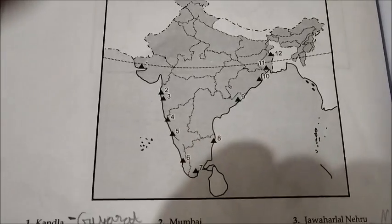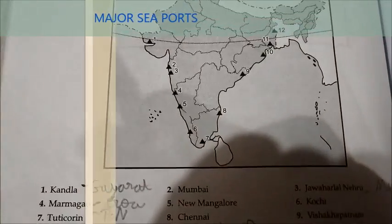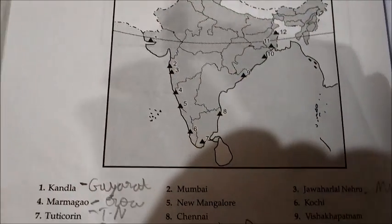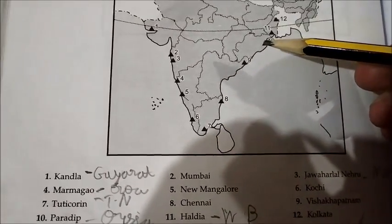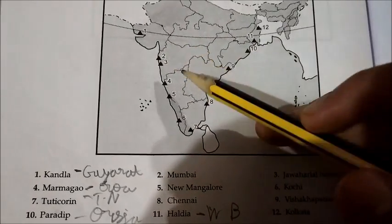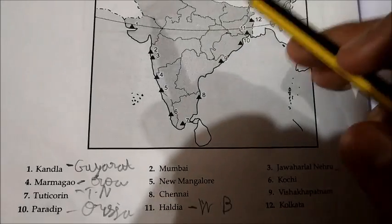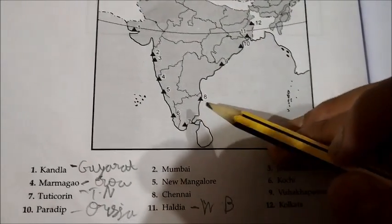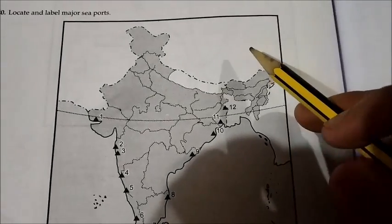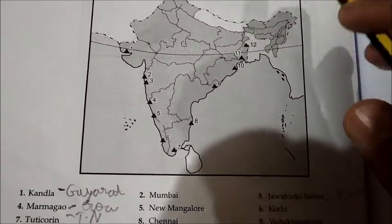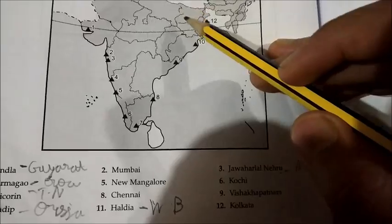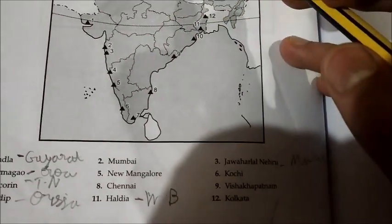For major seaports: Kandla in Gujarat, Marmagao in Goa, Tuticorin in Tamil Nadu, Paradip in Orissa, Mumbai, New Mangalore in Karnataka, Chennai, Haldia in West Bengal, Jawaharlal Nehru Port in Mumbai, Kochi in Kerala, Visakhapatnam in Andhra Pradesh, and Kolkata — the capital of West Bengal. These are the 12 places to remember for major seaports.